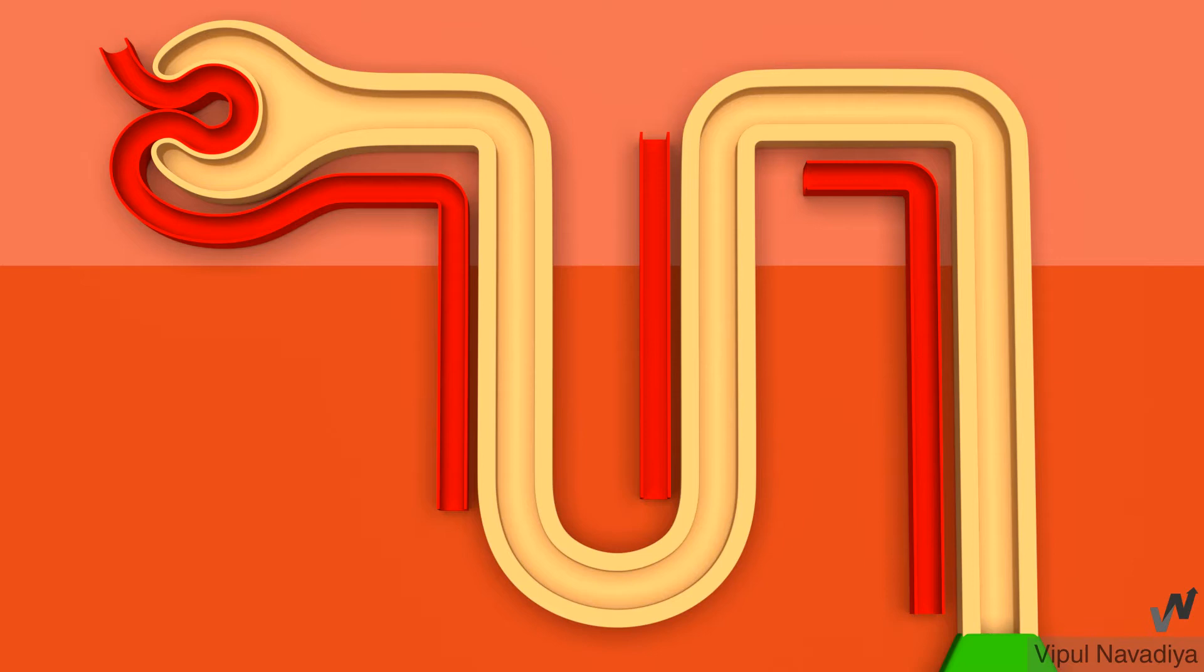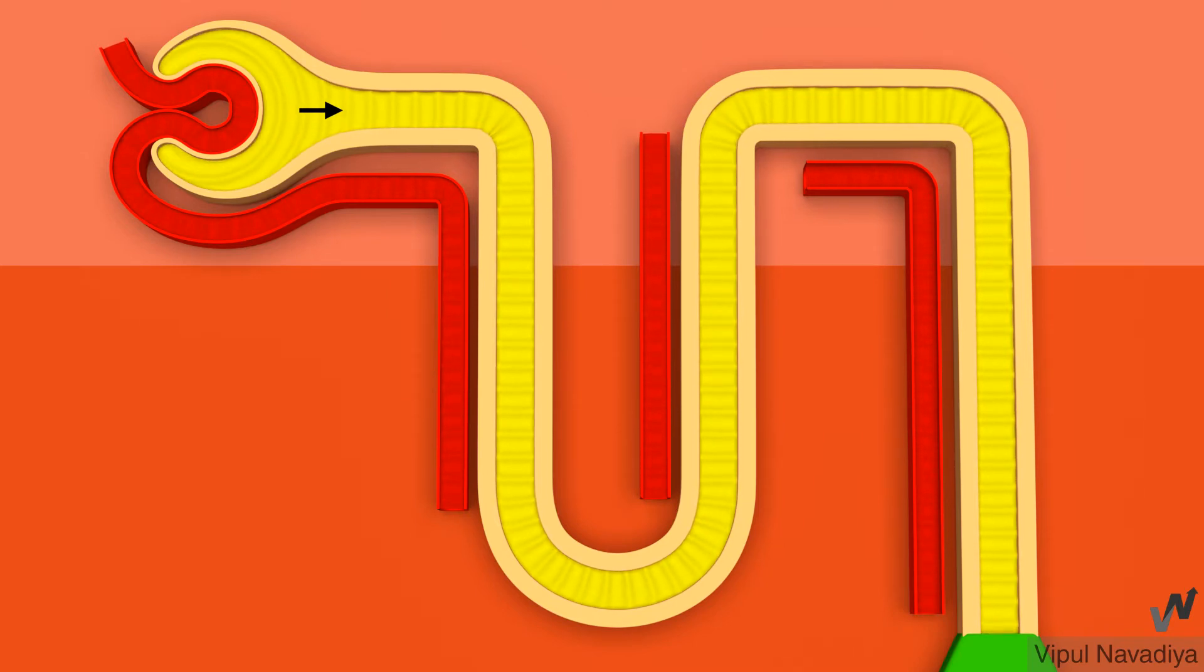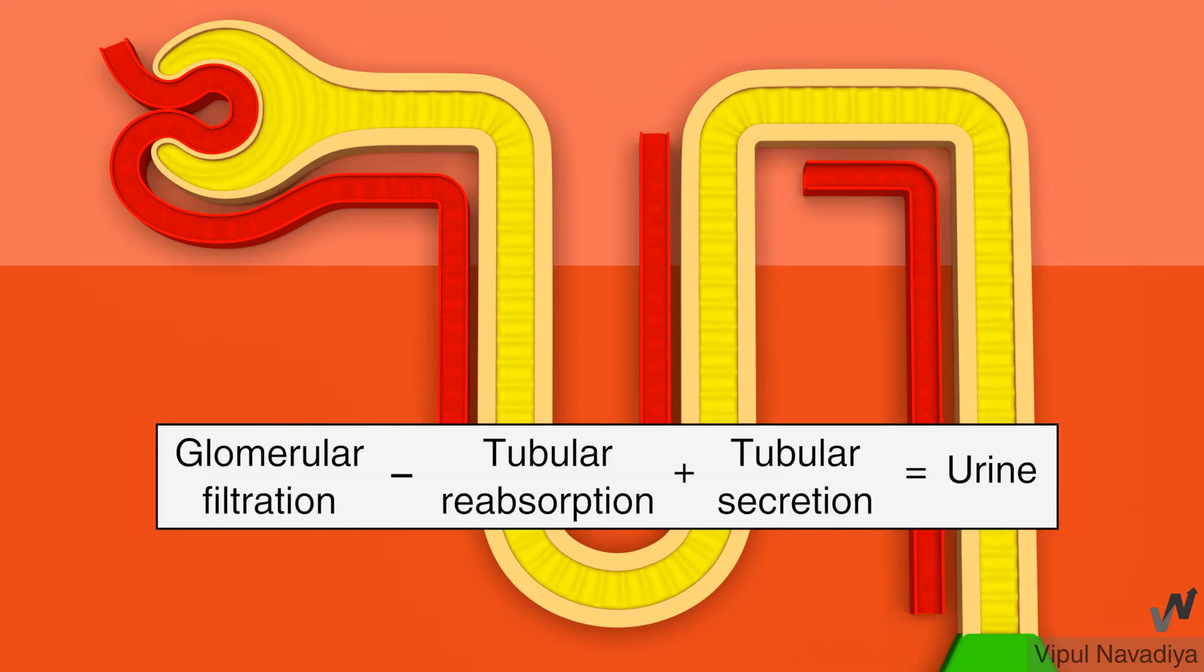So now coming to the tubular processing. We have seen that glomerular filtration produces a large quantity of filtrate. Now that filtrate is further processed during its passage through the tubule. This processing involves reabsorption of certain substances from the tubule and secretion of some into the tubule. Thus, final urine is an end product of these three processes: glomerular filtration minus tubular reabsorption plus tubular secretion.